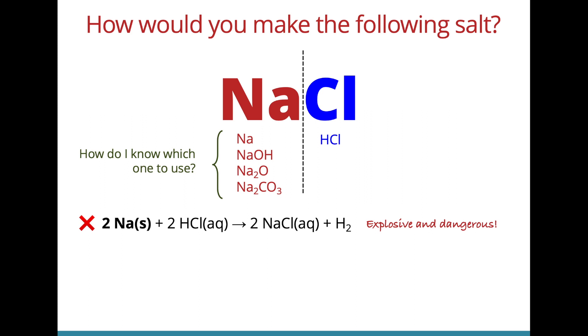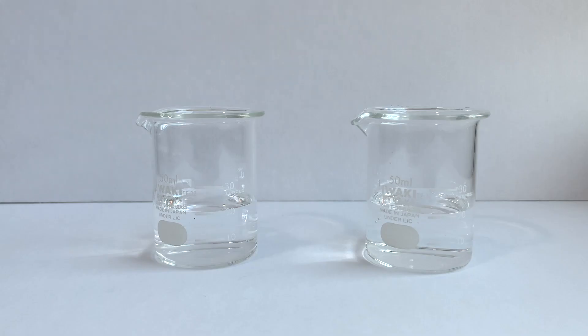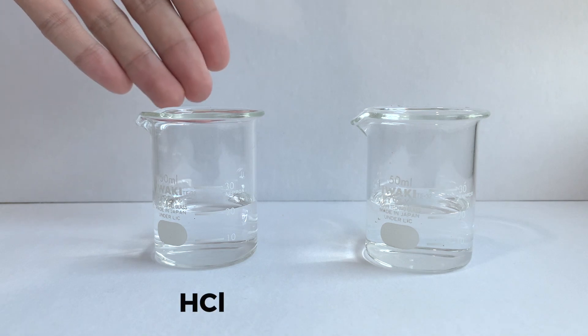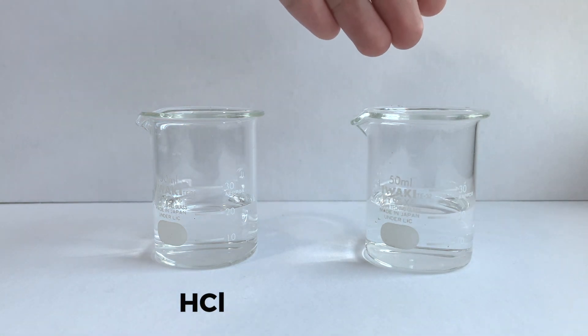Instead, a safer method would be to use the reaction between an alkali and acid, for example sodium hydroxide and hydrochloric acid to form sodium chloride and water. Now let's head over to the lab and I'll show you what I mean when we say we are reacting an alkali with an acid. On the left hand side I have hydrochloric acid and on the right hand side I have sodium hydroxide.